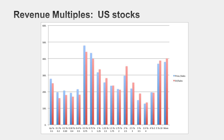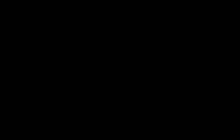Here's the distribution of price-to-sales and enterprise value-to-sales ratios for U.S. companies. Notice that it's not as peaked as price-to-earnings or price-to-book — it's a much more uniform distribution. This tells you that revenue multiples vary much more widely across sectors than earnings or book value multiples, which means any rule of thumb based on revenue multiples is not going to work.